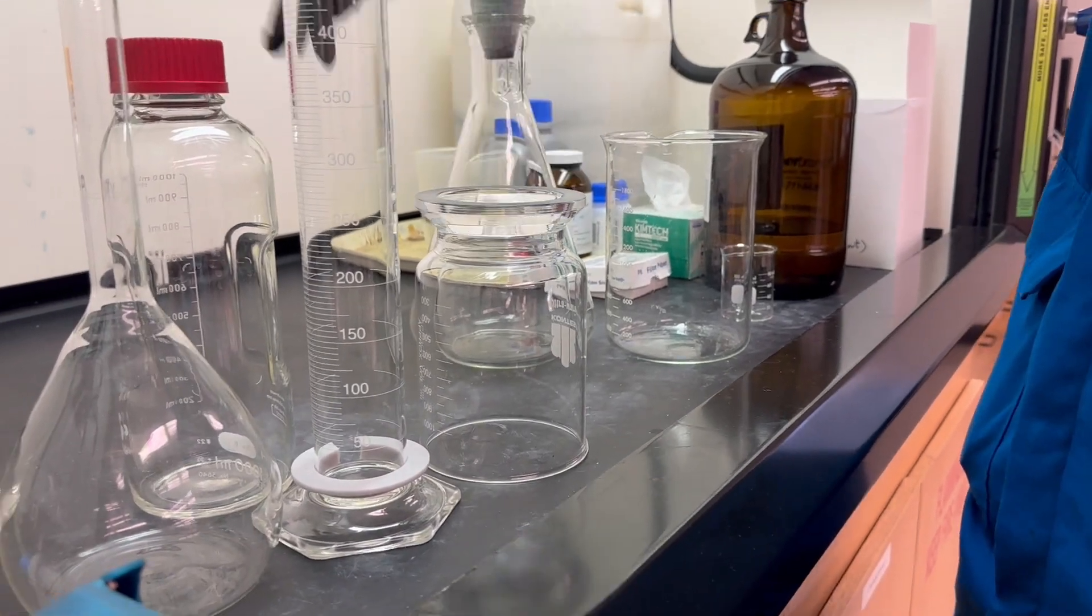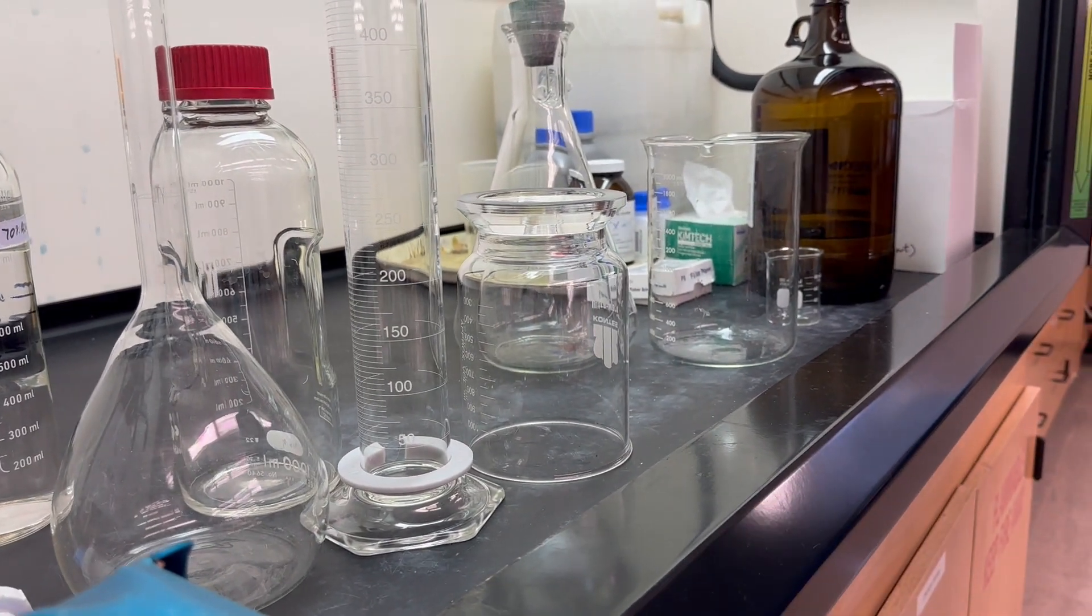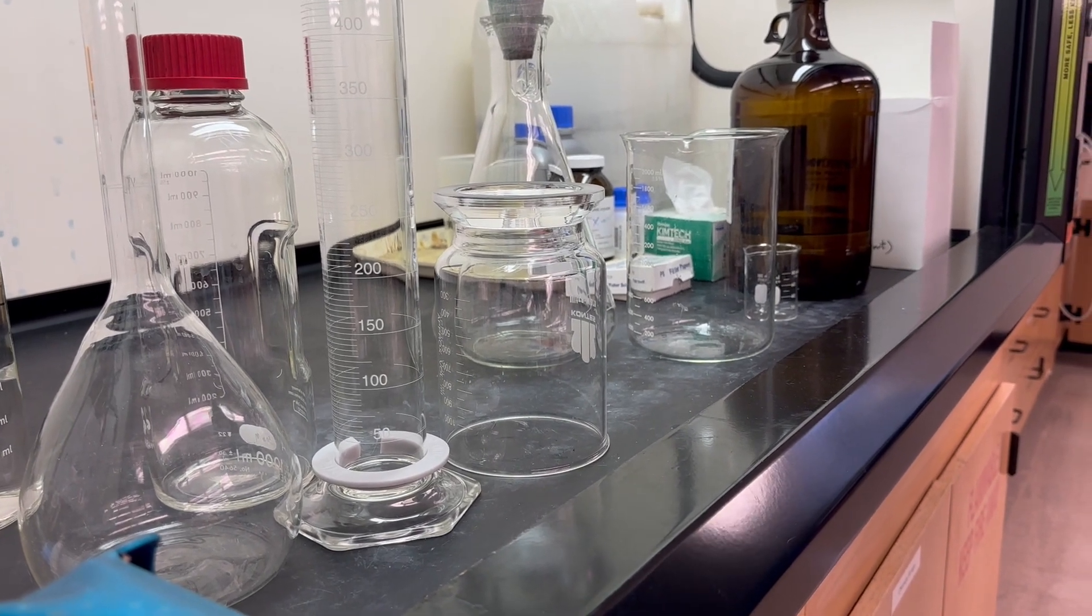That vacuum filter solution will then go in the mobile phase bottle, and we'll need it stirring at 800 rpm for at least 20 minutes.